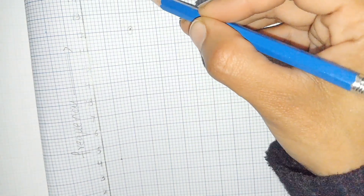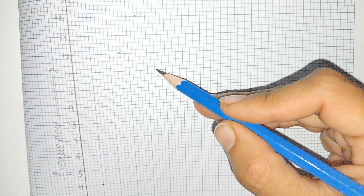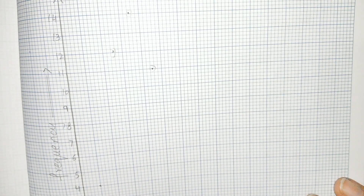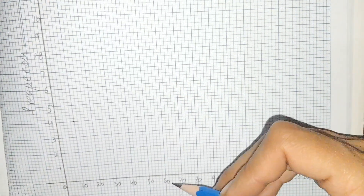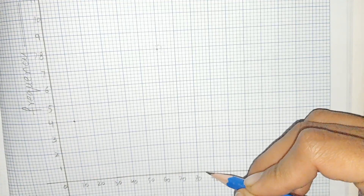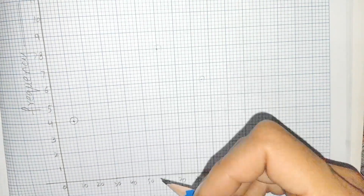At midpoint 35, the frequency is 14. At midpoint 45, the frequency is 11. At midpoint 60, the frequency is 8. At midpoint 85, the frequency is 6. Now we have to join these points.